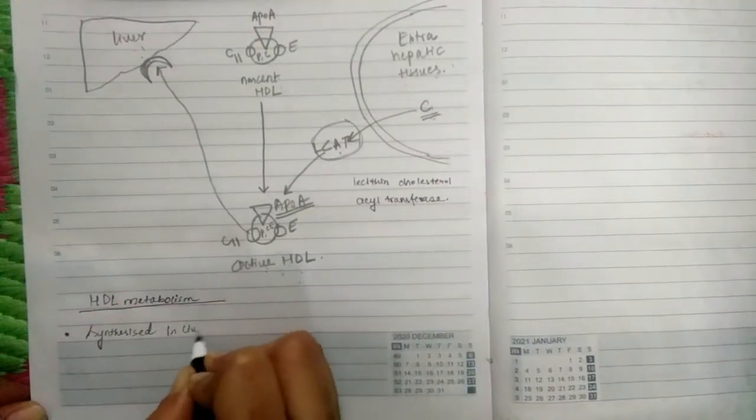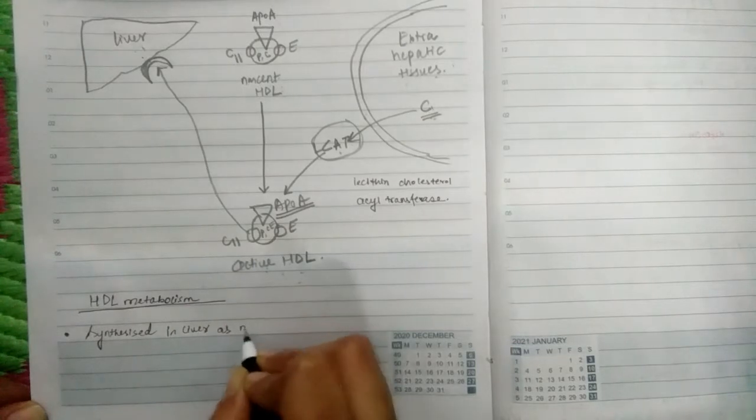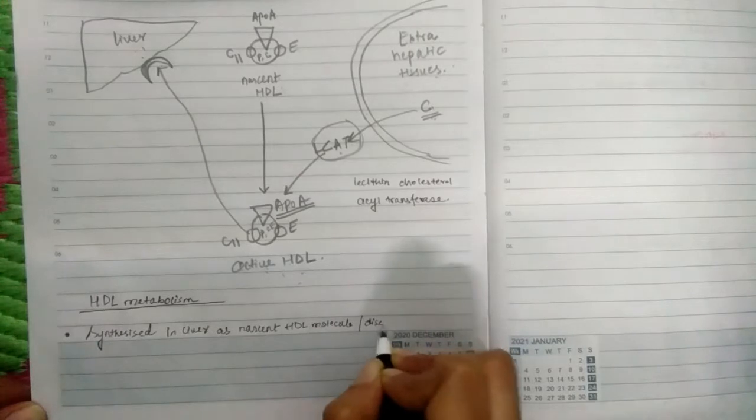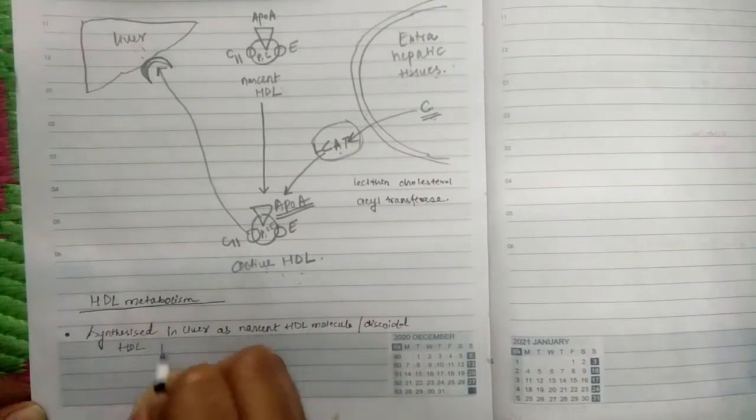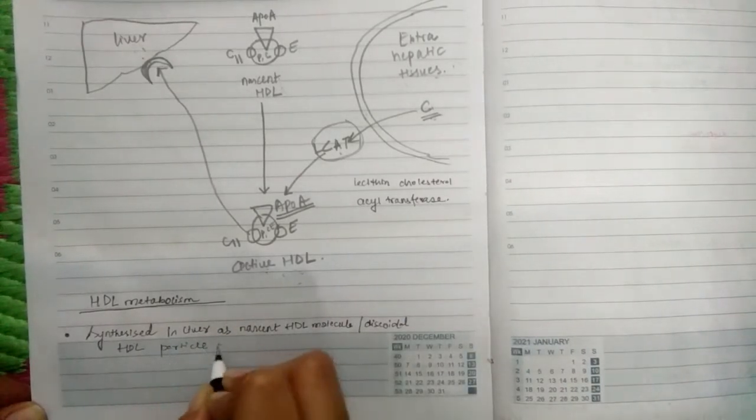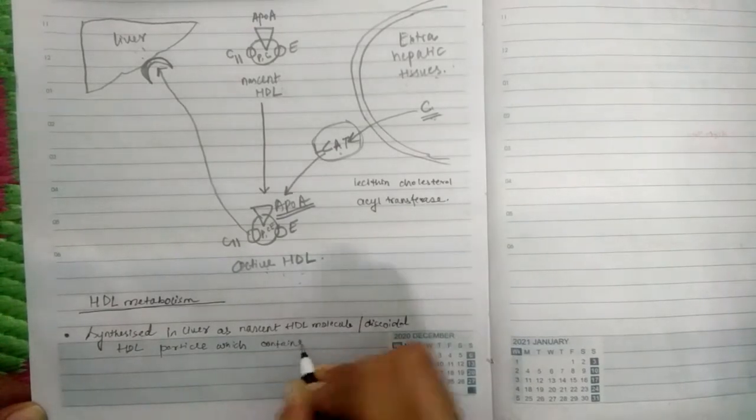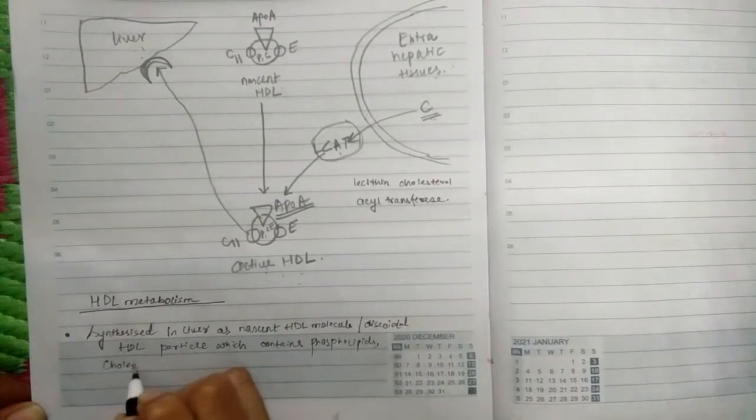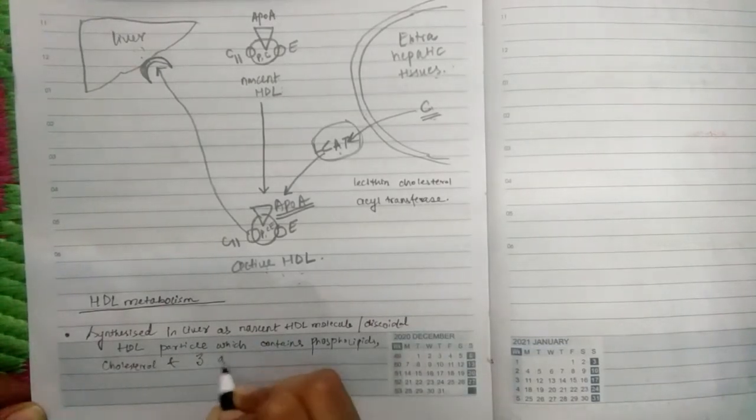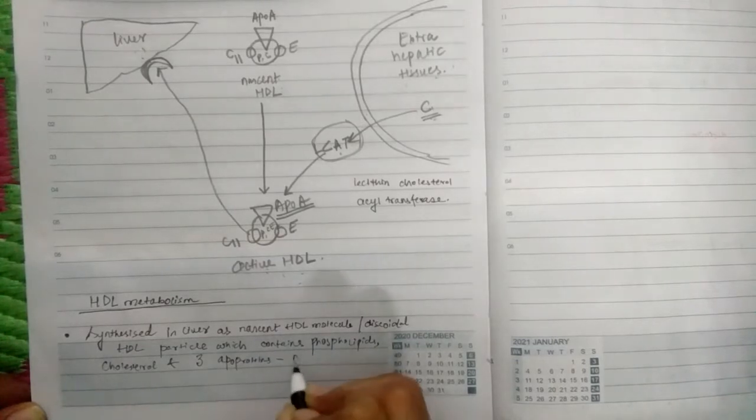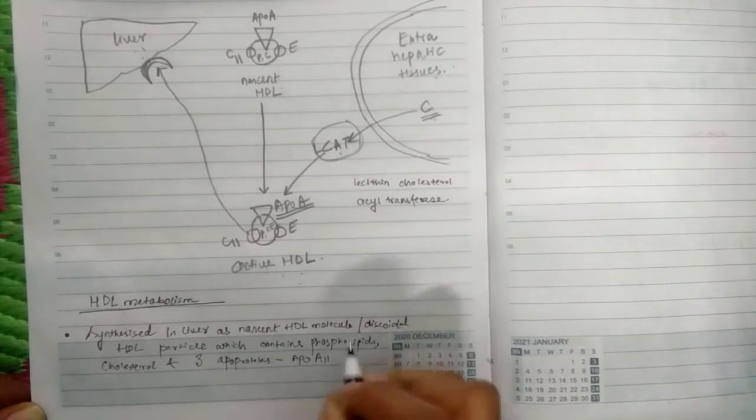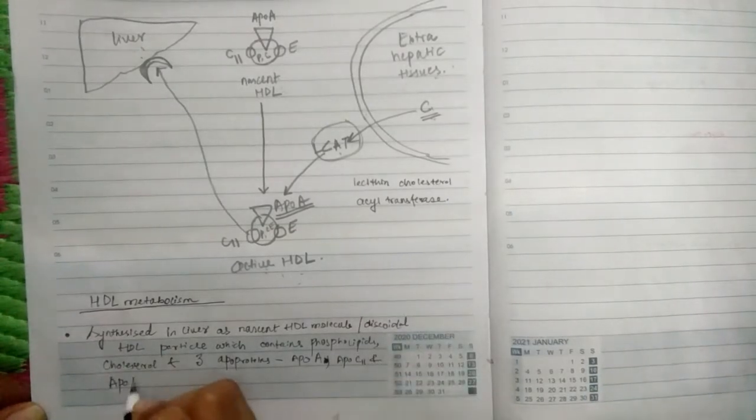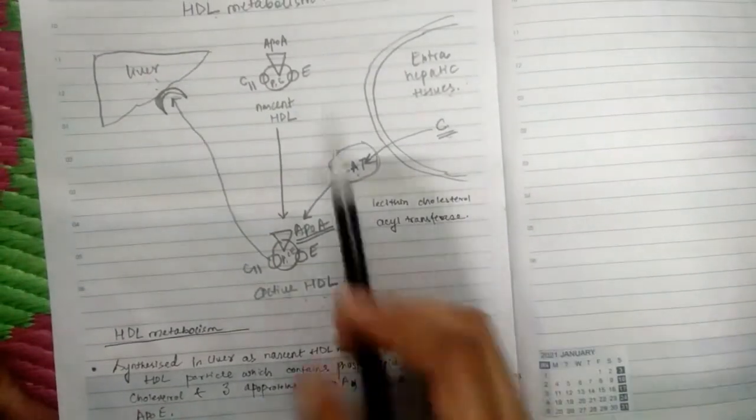HDL is synthesized in the liver as nascent HDL molecule or discoidal HDL particle which contains phospholipids, cholesterol, and three apoproteins: apoprotein A, apoprotein C2, and apoprotein E.